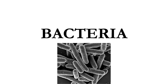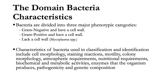Now we'll move on to bacteria, the biggest bulk of our discussion on prokaryotic cells. According to Bergey's Manual, the domain Bacteria contains organisms broadly divided into three phenotypic categories: those that are gram-negative and have a cell wall, those that are gram-positive and have a cell wall, and those that lack a cell wall. Many characteristics are examined for identification, including cell shape, morphologic arrangement, staining reactions, motility, colony morphology, atmospheric and nutritional requirements, biochemical and metabolic activities, specific enzymes produced, pathogenicity, and genetic composition.